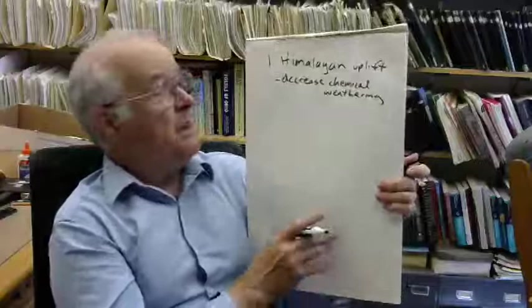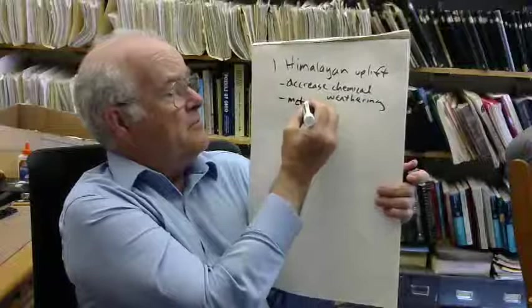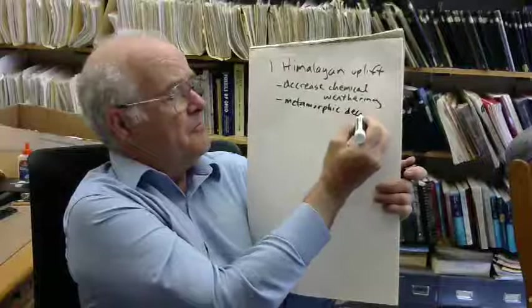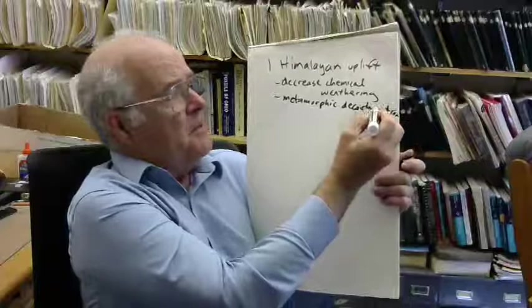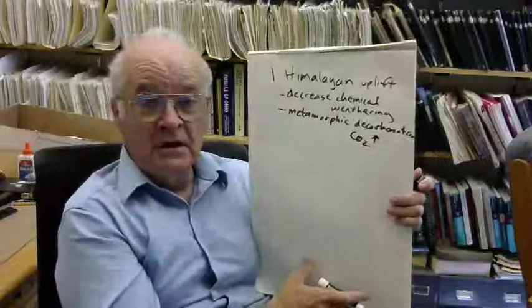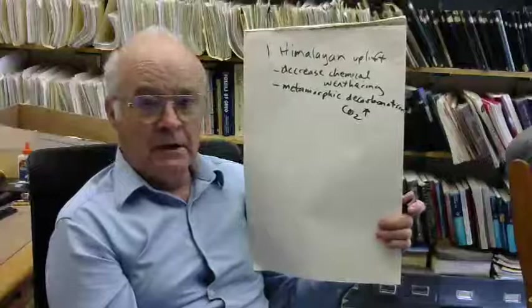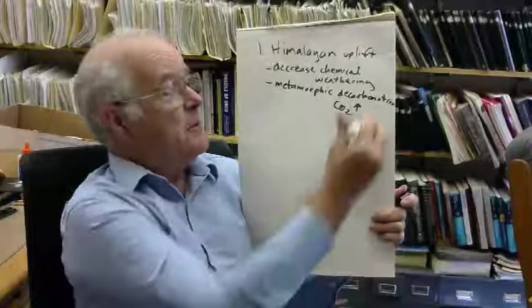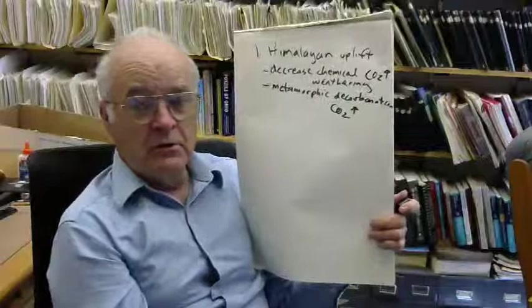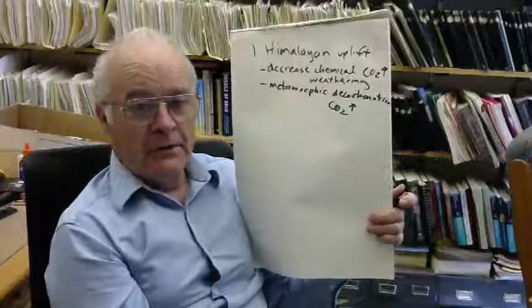Furthermore, there's metamorphic decarbonation. At depth, we're having CO2 which is actually being released by metamorphic reactions. The hot springs and carbon springs all around the Himalayas are increasing the amount of CO2 in the atmosphere. This is also increasing CO2 because it's no longer sequestering it. The arrow is going the wrong way. Himalayan uplift was a force for warming, not a force for cooling.